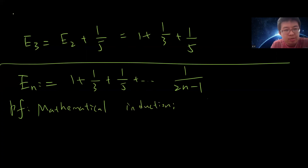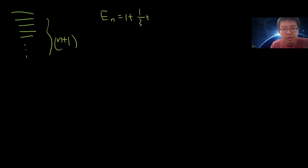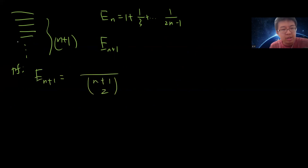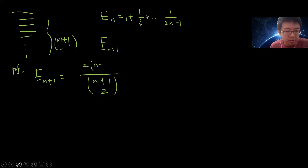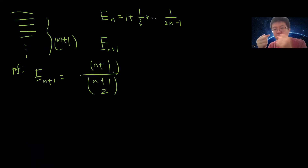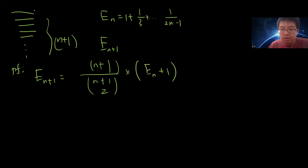Suppose the claim holds for n noodles: E_n = 1 + 1/3 + ... + 1/(2n−1). I want to prove it for n+1 noodles. With n+1 noodles we have 2(n+1) ends, so we choose 2 from 2n+2 ends. If I choose both ends of the same noodle — a self-loop — that counts as one circle, and the remaining n noodles give E_n.